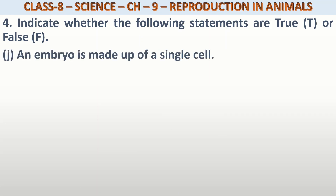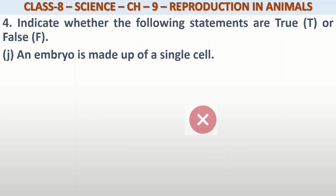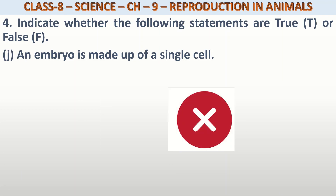An embryo is made up of a single cell. Embryo single cell का है? नहीं। क्योंकि zygote single cell का है, अब वो further develop होता है, उसके cells multiply होते हैं, तब embryo बनता है। Means embryo क्या है? Multicellular।